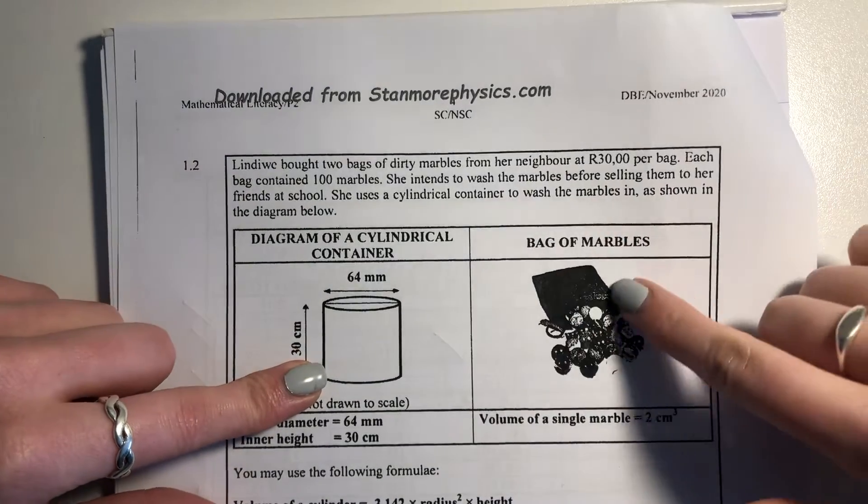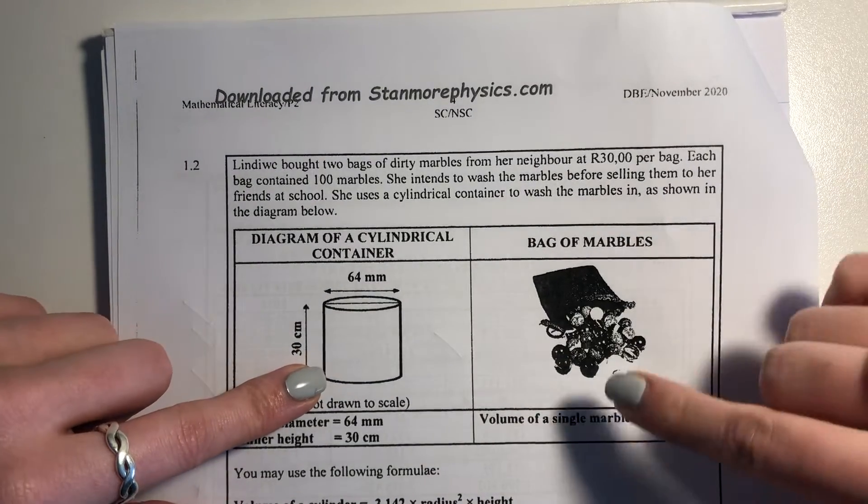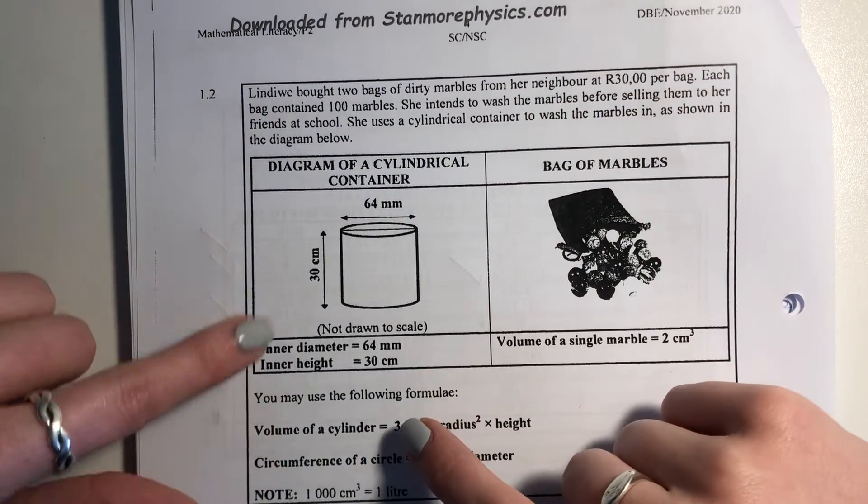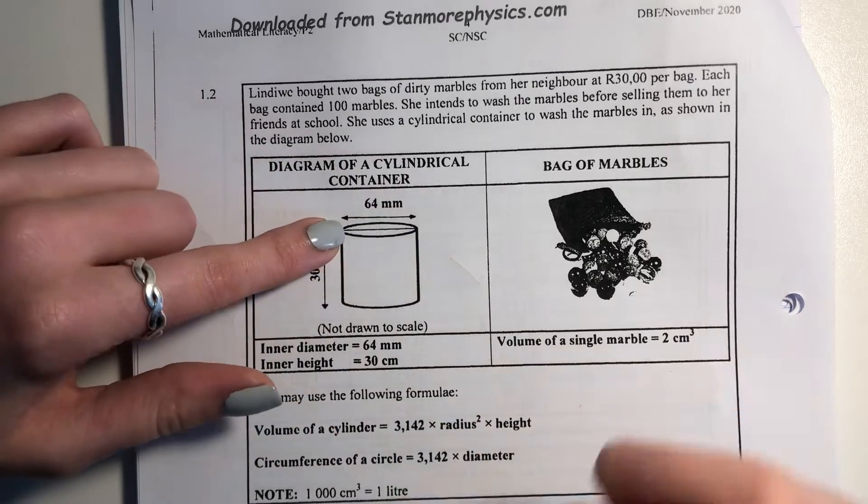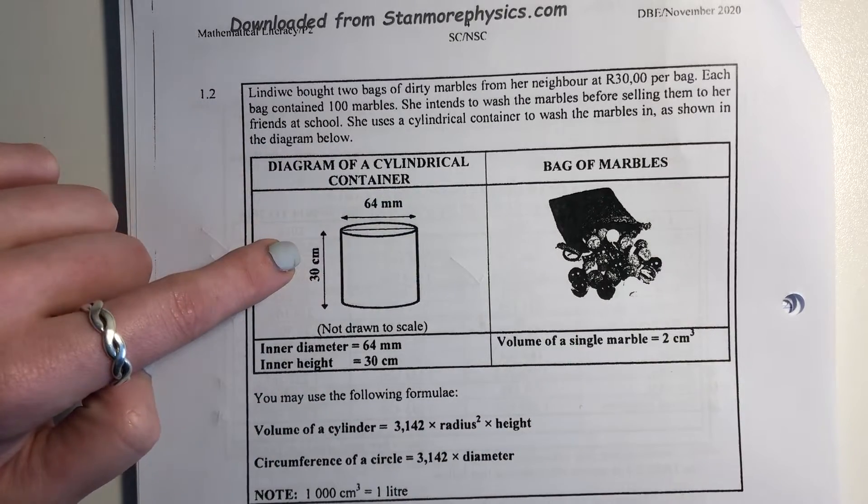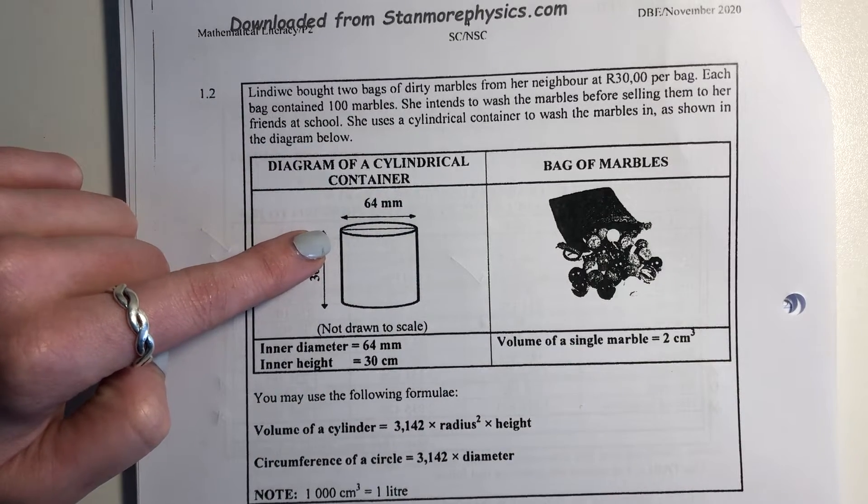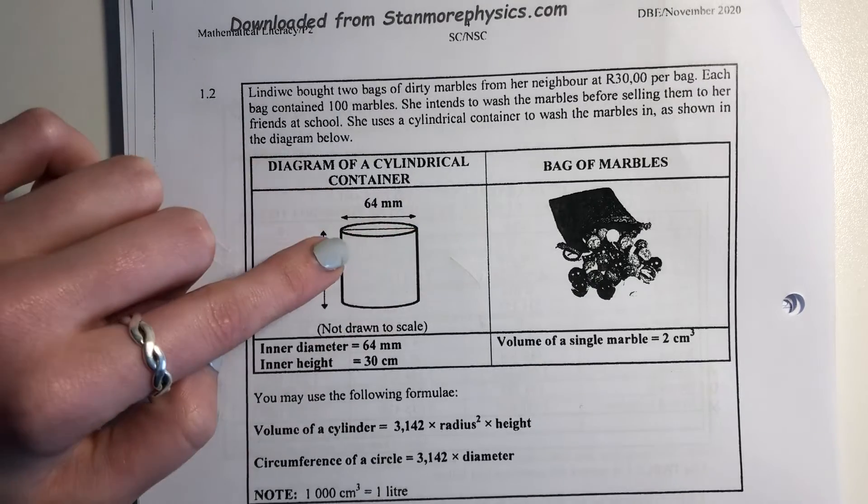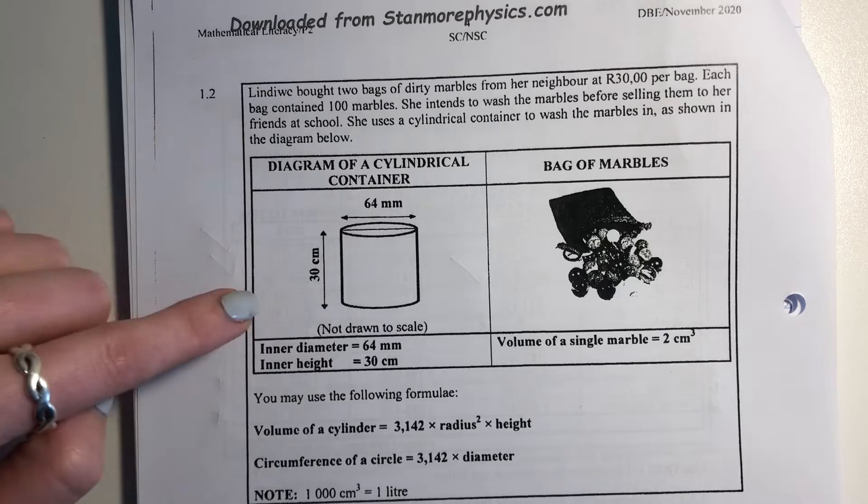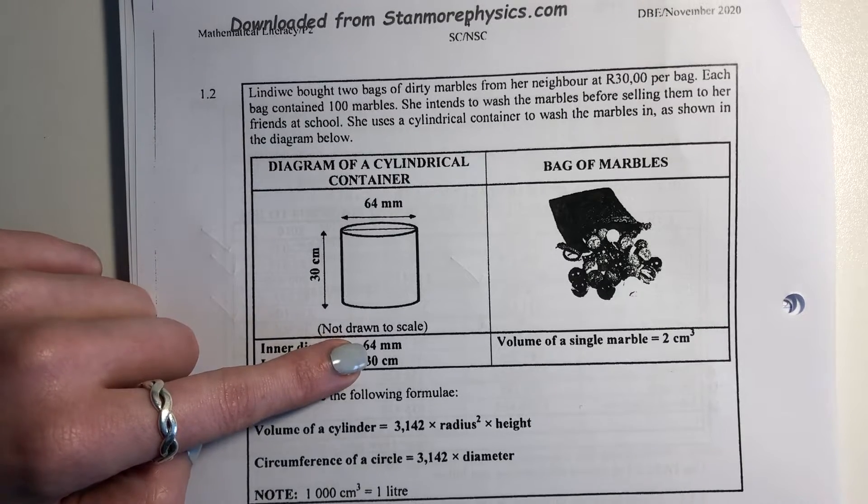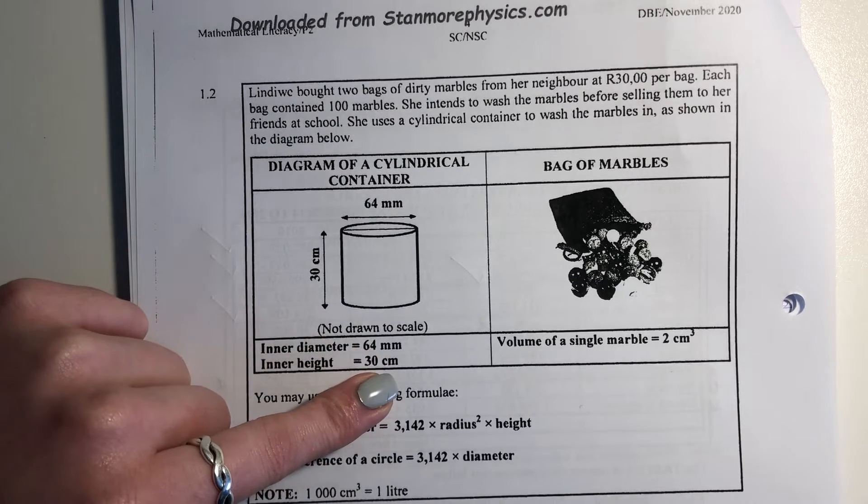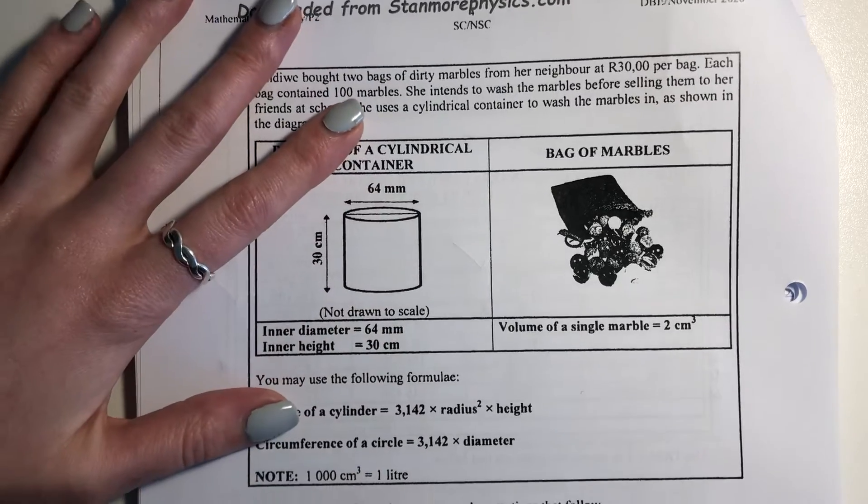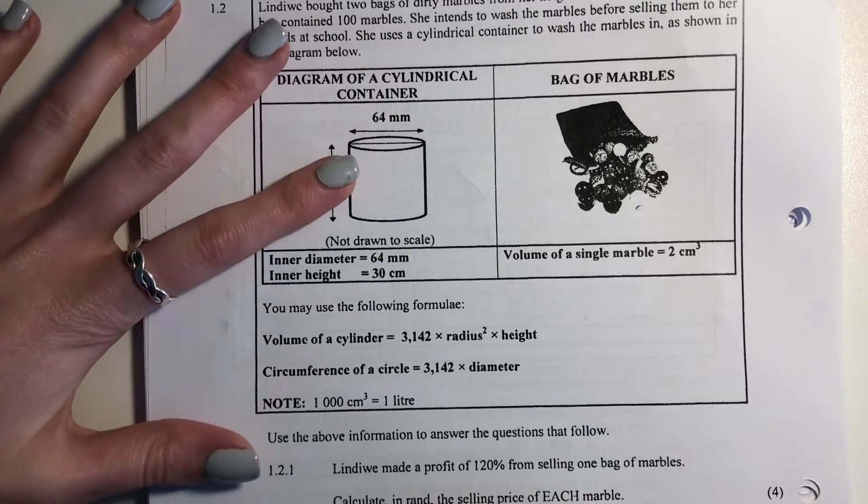So basically, here's the marbles. It tells you the volume of each of them. Then she puts these marbles into this container and she cleans them. They tell us about this container, they tell us about its height, and they tell us about its diameter. Now be careful. Diameter basically means that if I draw a line from that side of the circle to the opposite side, through the middle, it's going to be 64 millimeters. You need to note that millimeters and centimeters are different units. You're going to have to think about possibly changing those into the same units if you're going to use them in the same formula.